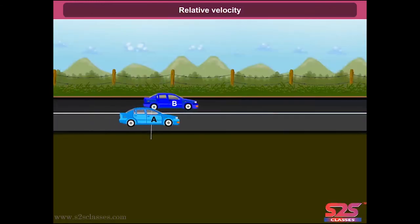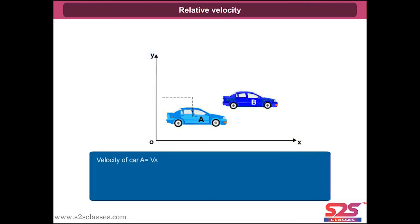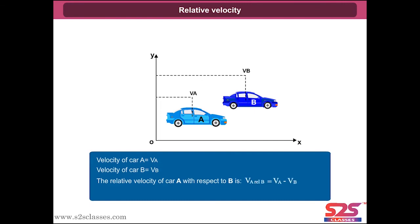Relative velocity: two cars A and B are moving uniformly in one dimension. If the velocity of car A is VA and car B is VB, then the relative velocity of car A with respect to B equals VA minus VB. Conversely, the velocity of car B relative to car A is VB minus VA.